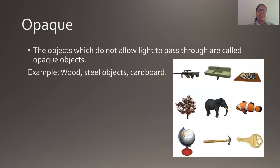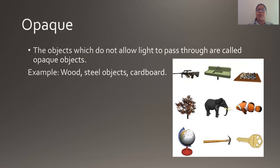The last type is opaque objects. There are some objects which do not allow light to pass through at all. Suppose you are in a dark room with doors and windows closed — the light of that room will not pass into another room because the walls and doors do not allow light through. All things which do not allow light to pass through are termed as opaque objects. Examples are gold, steel objects, cardboard, etc. Even we human beings are also opaque objects — when light is thrown on us, it definitely does not pass through our body.